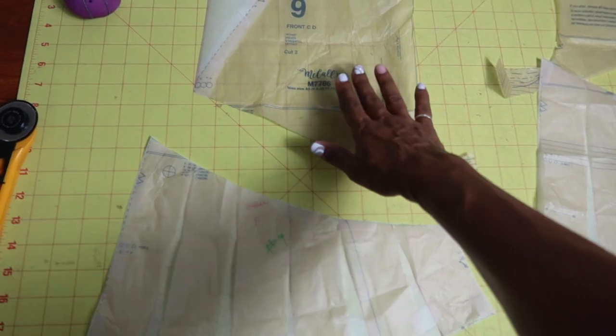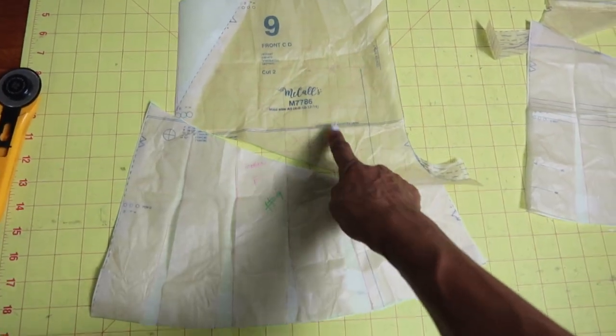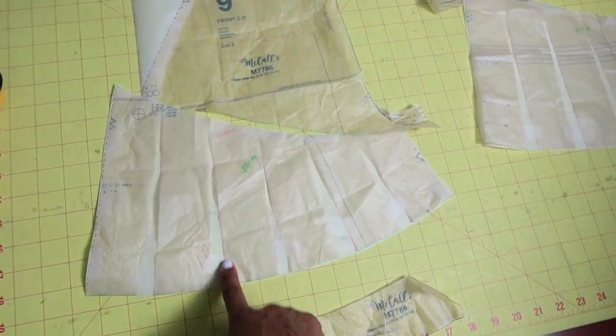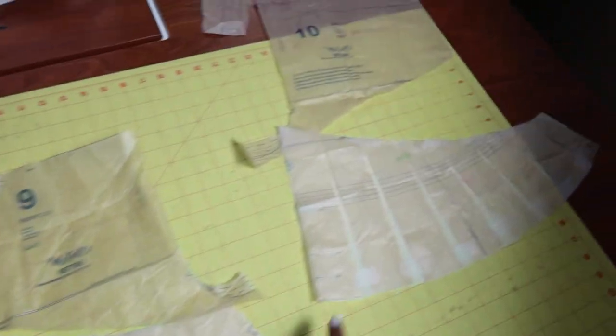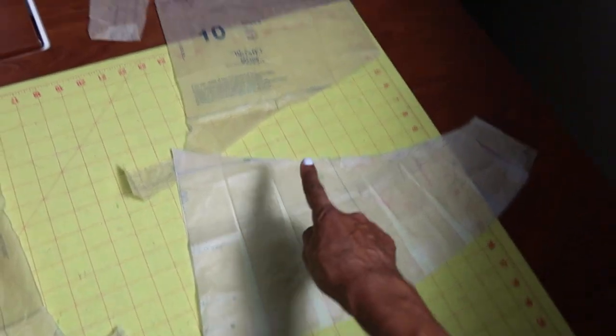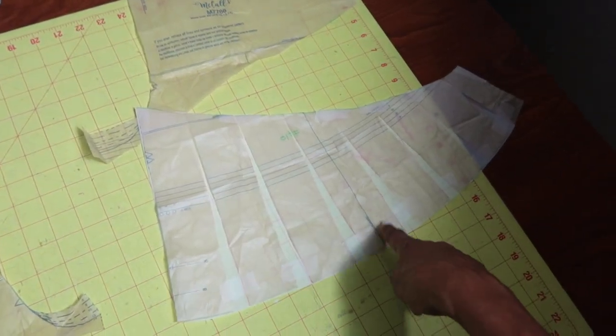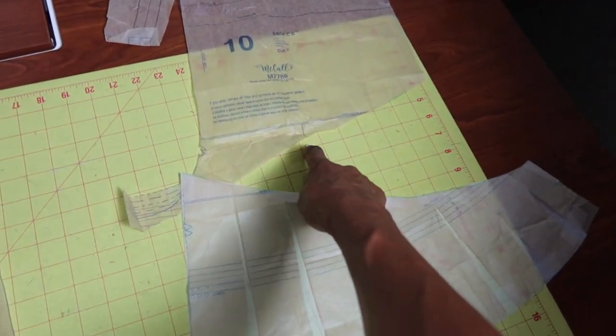Here is the lower portion that will be attached to this. This has been slashed and spread apart, and then I did the same thing on this side. I slashed and spread this, which will be attached to this back piece.